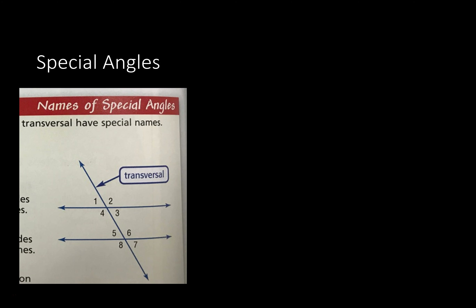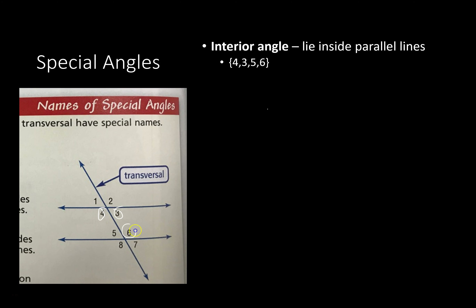There are some names for special angles when you get a transversal across two parallel lines. The first is the interior angles — these are the angles that lie inside of the parallel lines. That would be numbers four, three, six, and five. You can also see it like the interior angles are kind of these little horseshoe ones in here.